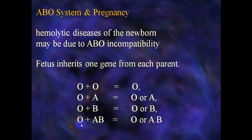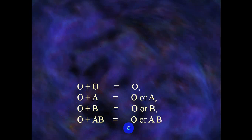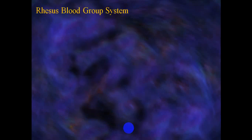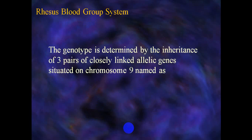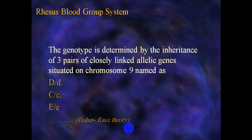Regarding the RH blood group system, first demonstrated in rhesus monkey, blood groups are classified as RH-negative or RH-positive. The genotype is determined by inheritance of three pairs of closely linked allele genes situated on chromosome 9, named D, C, and E.